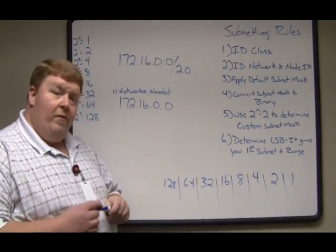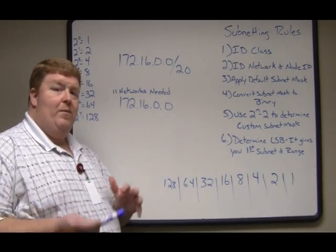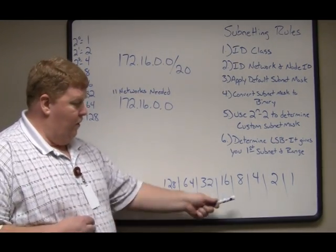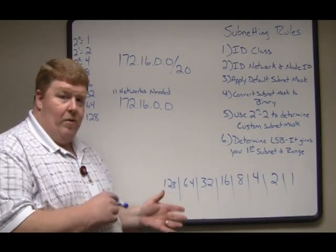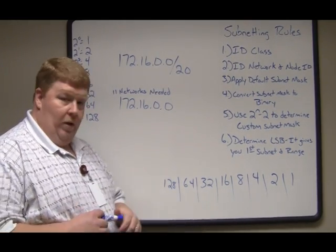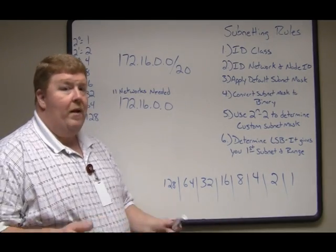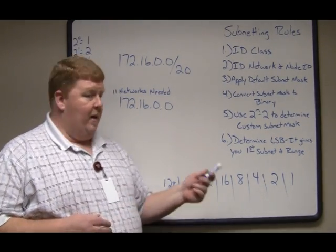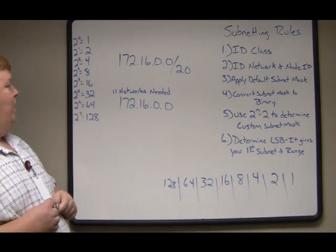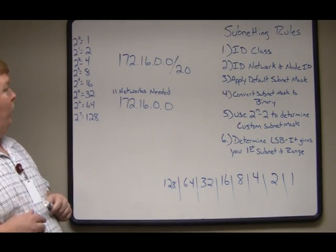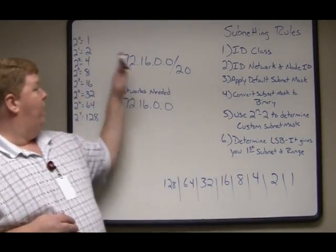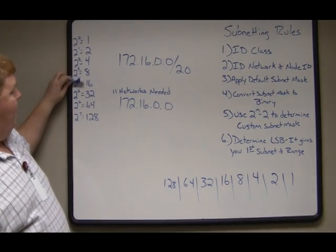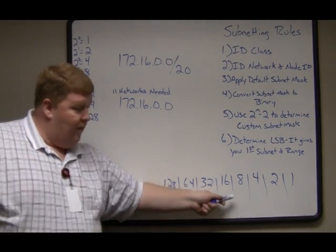If you've seen the earlier video where I showed you how to convert binary to decimal and decimal to binary, then you recognize at the bottom we have what we call our binary calculator. It's this little chart that will help you convert binary numbers to decimal numbers and vice versa — a wonderful little tool. I use this all the time even when I take certification tests. The same numbers you see down here are also here on the left side of the board: 1, 2, 4, 8, 16, 32, 64, 128.